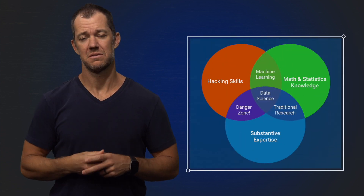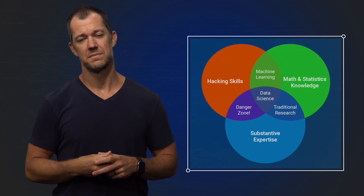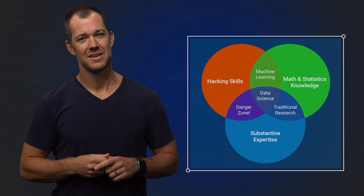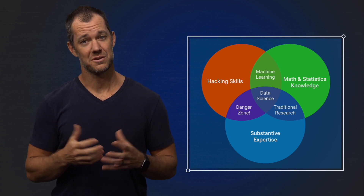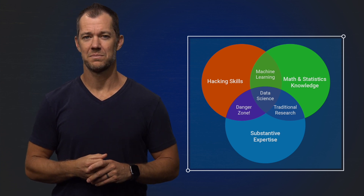Defining data science has a complicated history. And to understand why, we first need to return to a viral Venn diagram. Yes, you heard that correctly — a viral Venn diagram.